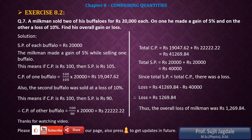So the overall loss of the milkman was Rs 1,269.84. This is the second example of this type — a similar one was covered in question number 5, which you can access from the link in the description. I hope you understood the example. If you like the video, please like, subscribe, share, and press the bell icon for future updates. Thanks for watching!